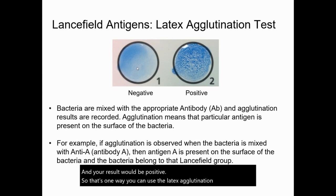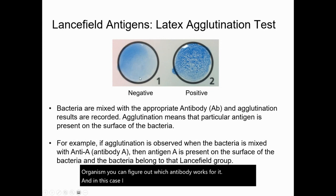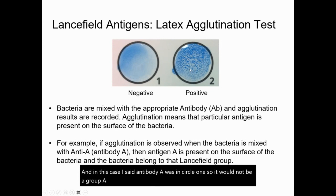If you know the organism, you can figure out which antibody works for it. In this case, antibody A was in circle one, so it would not be a group A Strep.